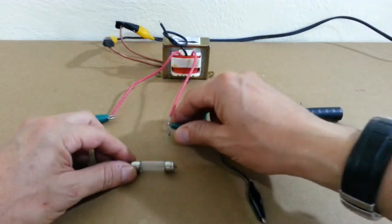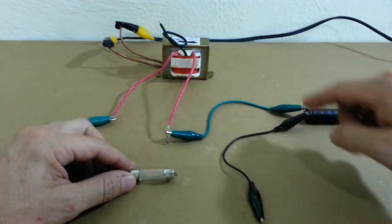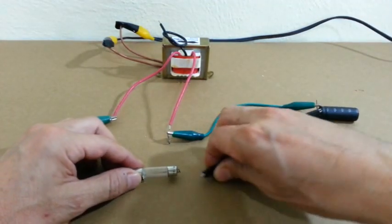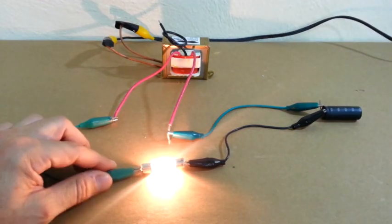Let me connect the lamp directly to the transformer. And now with the capacitor in the circuit. You can see how the brightness is less.